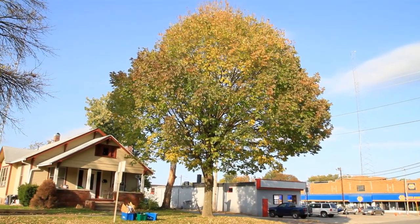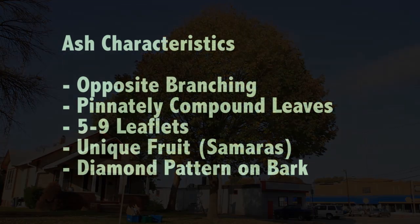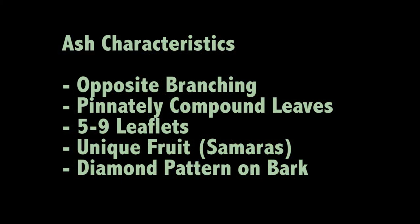We will cover these distinguishing characteristics of ash trees: opposite branching, pinnately compound leaves, five to nine leaflets, unique fruit or samaras, and a diamond pattern on the bark.